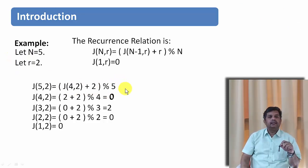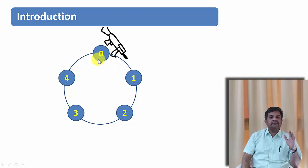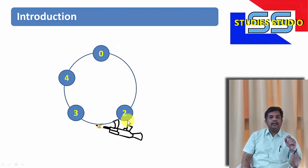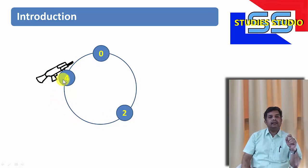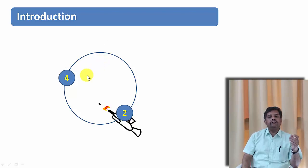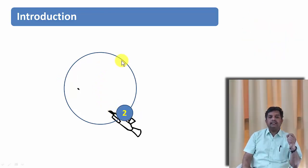Let us verify. With n equal to 5 and r equal to 2, the 0th person has the gun and kills the 1st person. He passes the gun to person 2, who kills person 3. The gun passes to person 4, who kills person 0. Person 4 passes the gun to person 2, who kills person 4. According to the formula we got 2, and with the animation we also see the 2nd fellow is alive — confirming the result.